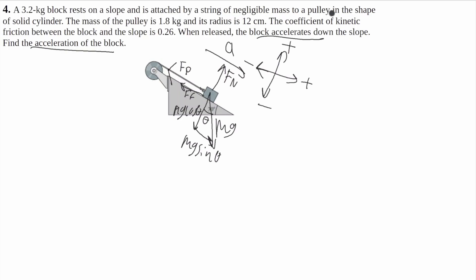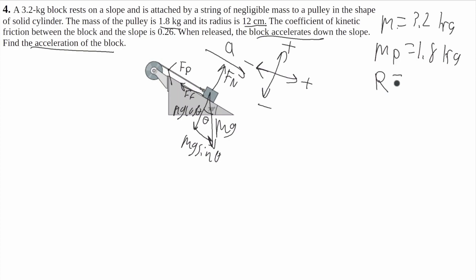Now I'm going to write what I know. The mass of the block is 3.2 kilograms. The mass of the pulley is 1.8 kilograms, so I'll call this Mp. The radius of the pulley is 12 centimeters, which is 0.12 meters. The coefficient of friction is 0.26, so mu is equal to 0.26. And the angle of this ramp is 30 degrees — theta is equal to 30 degrees.